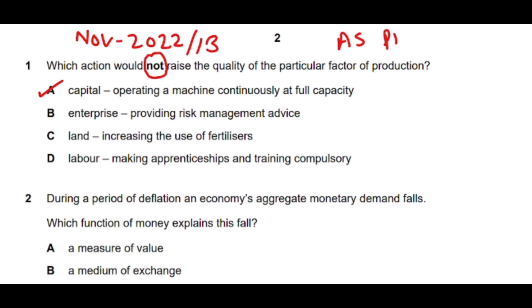You can stop the video, read the question carefully, and try to figure out the answer before listening to my explanation. Option A is correct: operating a machine continuously at full capacity. If you operate a machine at full capacity continuously, the quality of that capital will not raise — it will decrease, because continuously used machinery keeps depreciating and its value decreases instead of increasing.